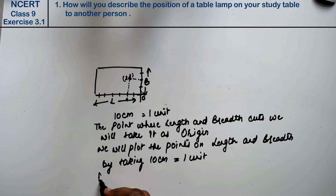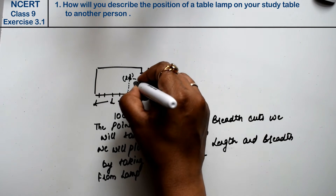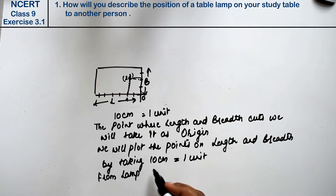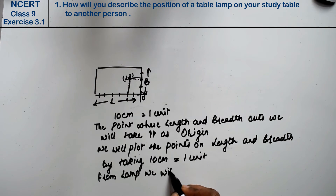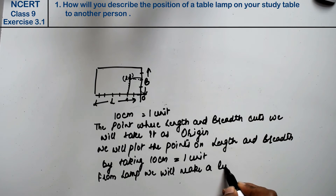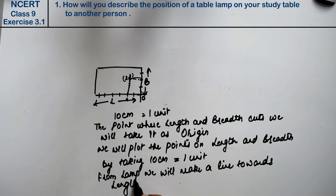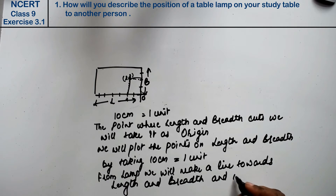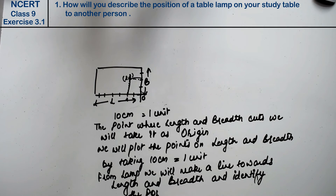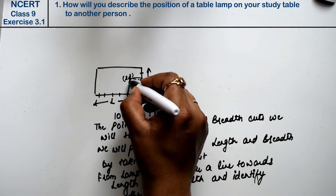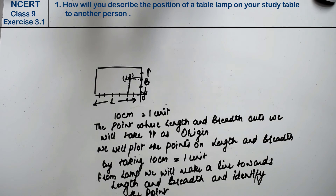From the lamp, we will draw a line towards the length and a line towards the breadth. We will make a line towards both length and breadth from the lamp, and identify the point where they meet. If we tell this point to anyone else, they can easily determine where our table lamp is.